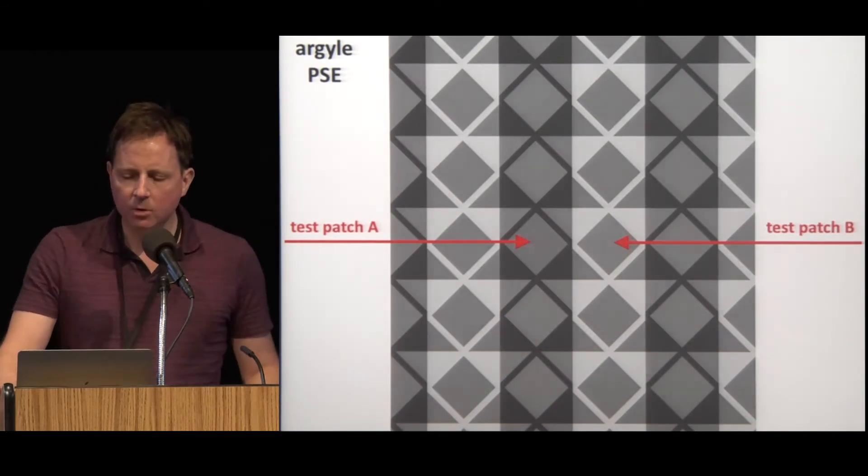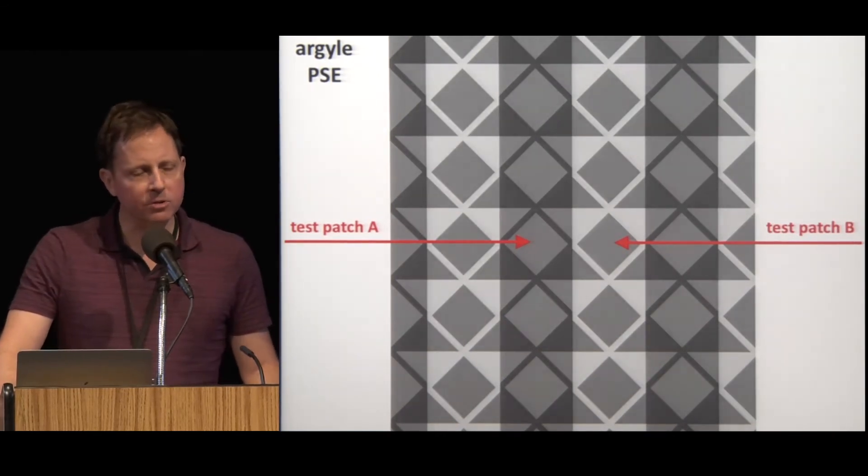I'm going to talk about some experiments where we probe the mechanisms of lightness perception using two tools that aren't usually used together, namely perceptual matches and reverse correlation.